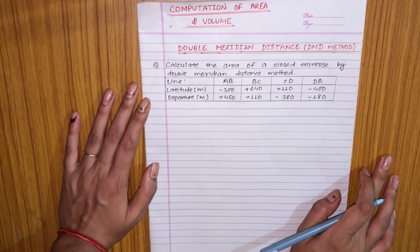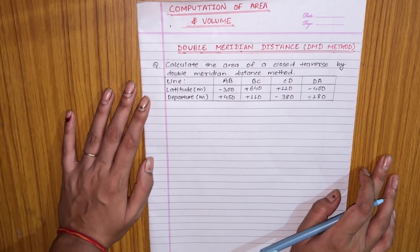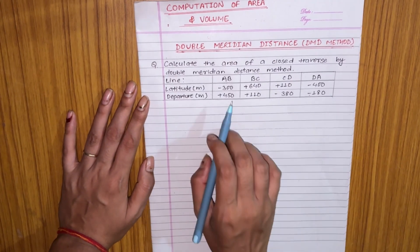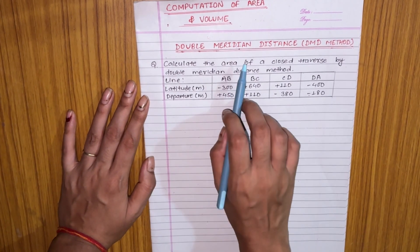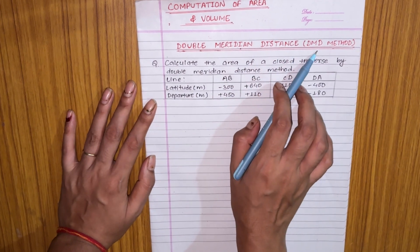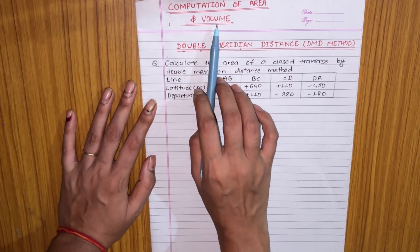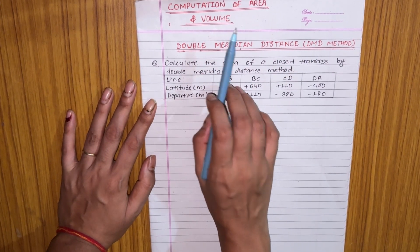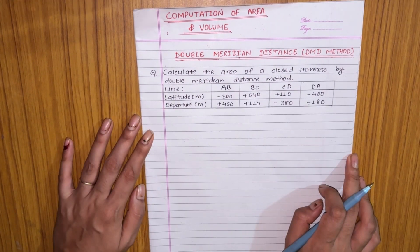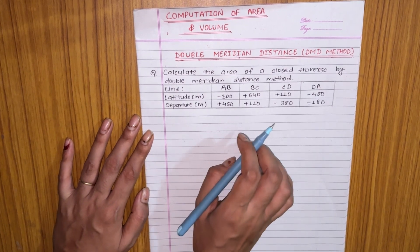Hi everyone, welcome back to my YouTube channel. Today we are going to solve a numerical by the Double Meridian Distance method of the chapter 'Computation of Area and Volume.' In the last video, we solved a numerical by the area by coordinates method. In this video, we will solve it by the Double Meridian Distance method, also known as the DMD method.